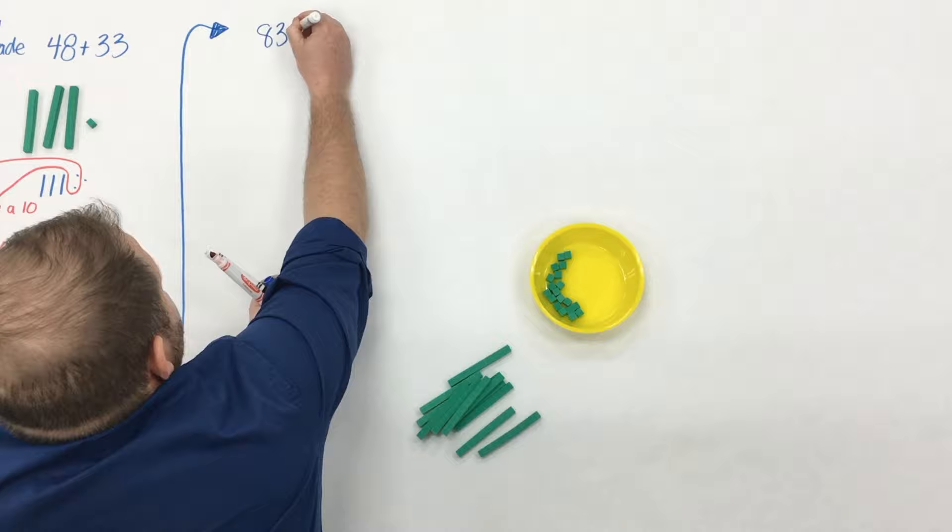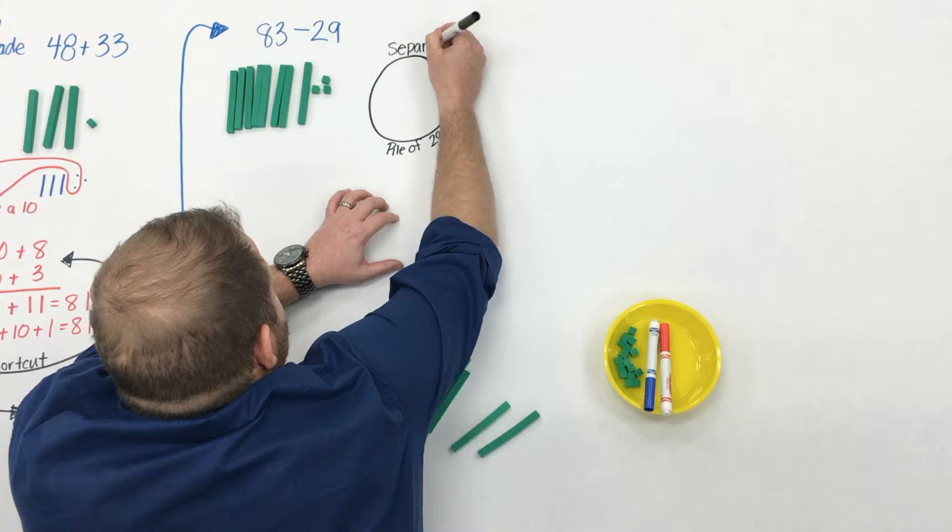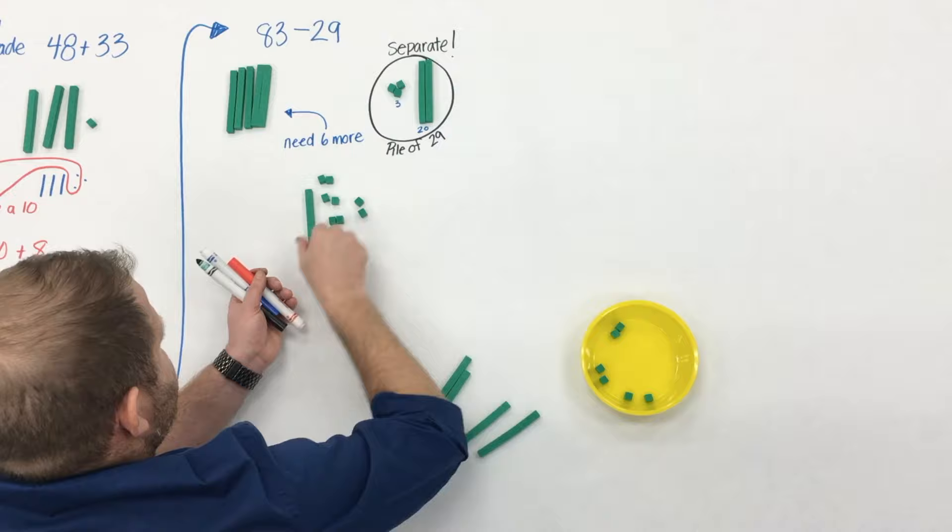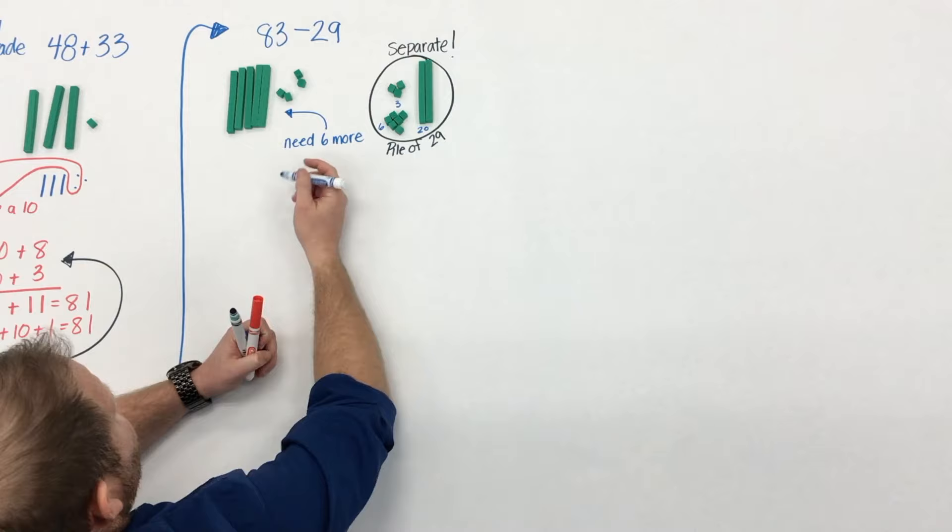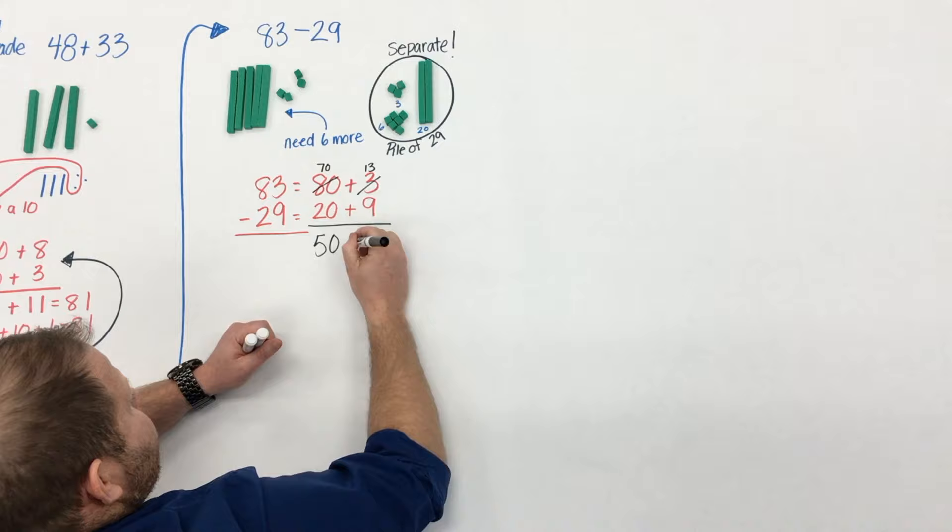So that works for addition but does it work for subtraction? Well we want to try and use models that continue to work the same and consistently throughout math. We don't want them to expire. So here we want to have 83 and we'll go back to that separating model. We want to put 29 inside there. Well we need six more. So this is a really big understanding for students where they make that fair trade and that idea of unitizing. So now we can take the 6 from the 10 and we're left with 4. So how can we move again from the concrete to the representation to the abstract?